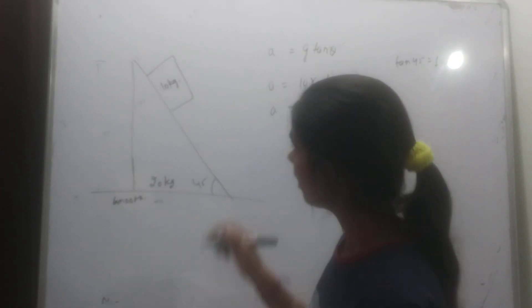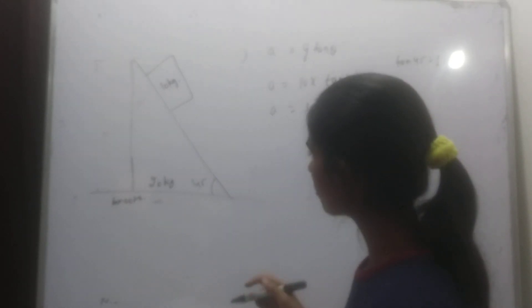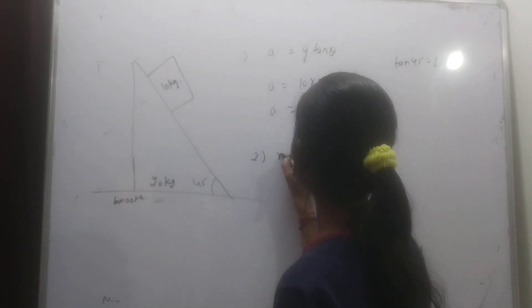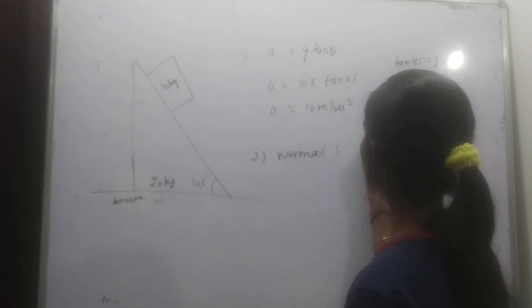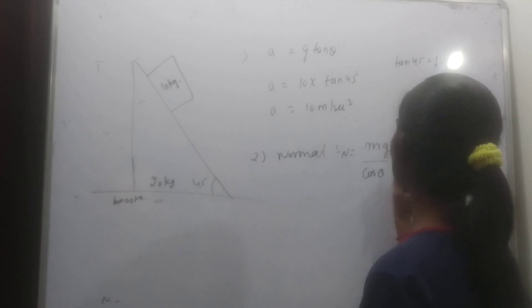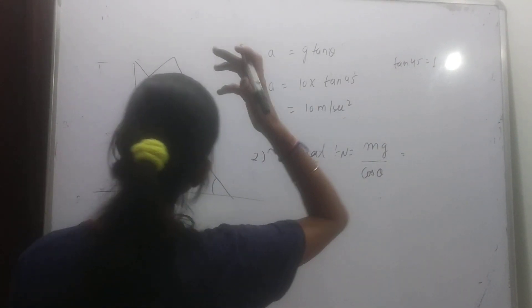Next part: find the normal reaction on the block when the block is at rest with respect to the wedge. The formula is Mg by cos θ. What do we need to do to calculate this?